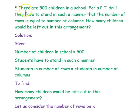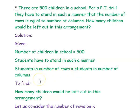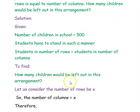The next example: there are 500 children in a school. For a PT drill, they have to stand in such a manner that the number of rows is equal to the number of columns. How many children would be left out in this arrangement?